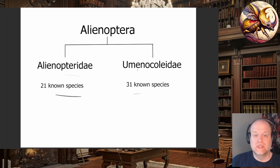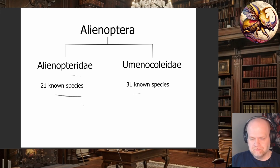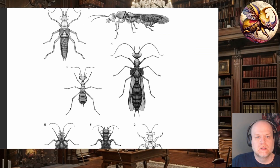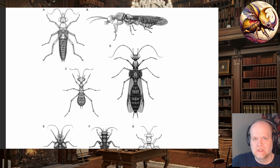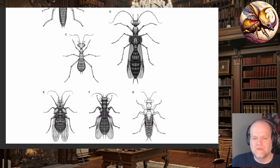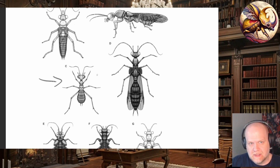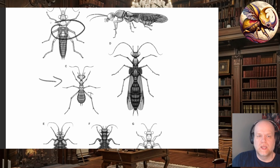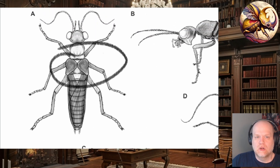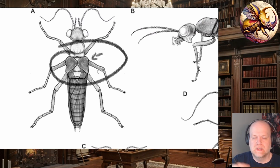Most of these are only known from amber — there are a few rock fossils, but most are known from amber. The Alienopteridae look like this; this is an artist's rendition based on the fossils. This is the group that is primarily the wasp and ant mimics, so you can see this specimen here is very much like an ant. In these species, they will either completely lack wings, or the forewing is shortened into a little hardened elytra-like scale. The elytra is the forewing of beetles, which is why some of these were thought to be related to beetles because of these forewings.